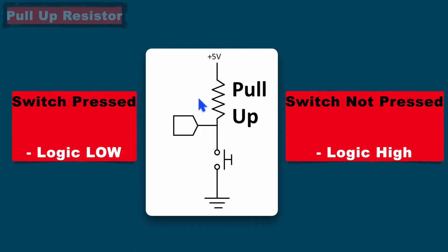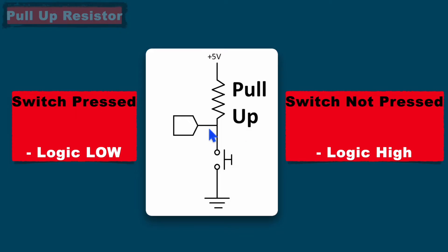Consider the scenario when we do not have this pull-up resistor. If the switch is pressed, it will make a short circuit and we get logic low — that is fine. But when the switch is not pressed, it will not make a short circuit, and since it is not connected to the pull-up resistor, it will not be at high state either. In that case, it will be at a floating state. So with the help of the pull-up resistor, we can avoid the floating state scenario.